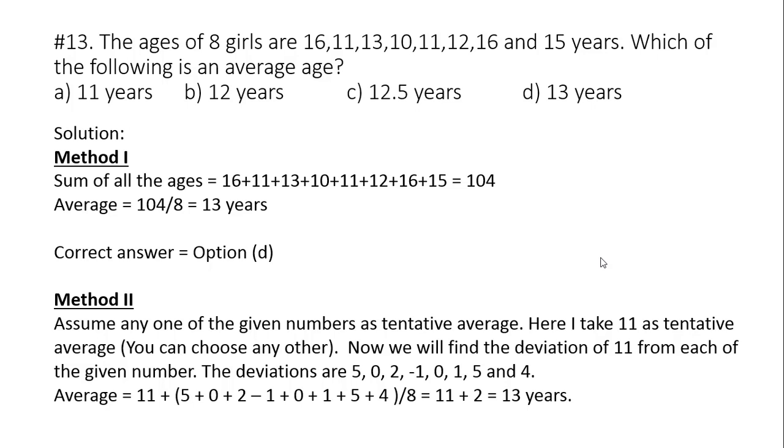Method 2. Assume any of the given 8 numbers as tentative average. So there are 8 numbers given and among those 8 numbers, we can choose any number as assumed average or tentative average. In this case, I have taken 11 as tentative average. Now I will find deviation of 11 from all the given numbers. Deviation means difference. So 16 minus 11 is 5, 11 minus 11 is 0, 13 minus 11 is 2, 10 minus 11 is minus 1, 11 minus 11 is 0, 12 minus 11 is 1, 16 minus 11 is 5 and 15 minus 11 is 4.